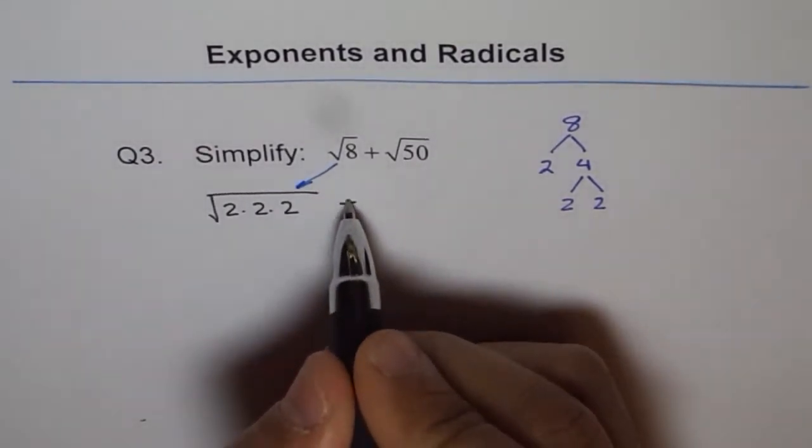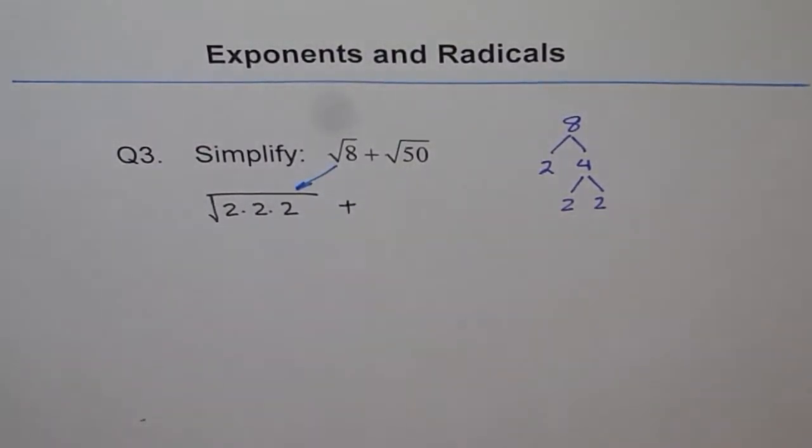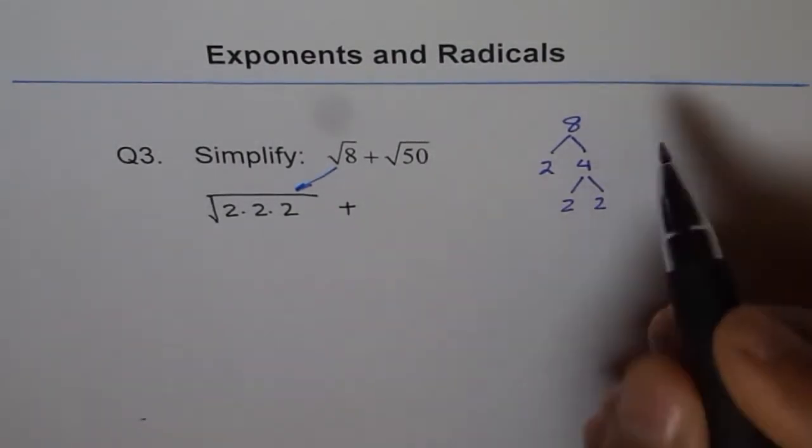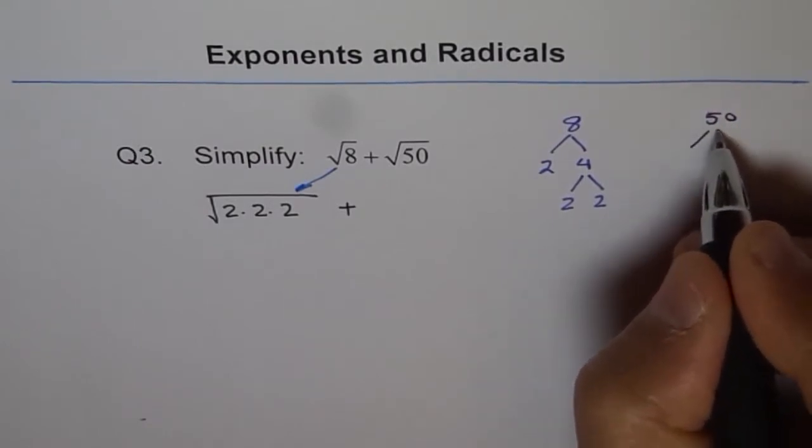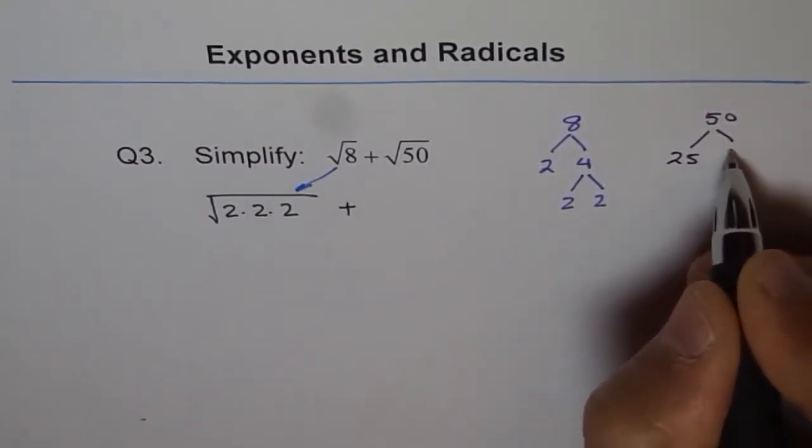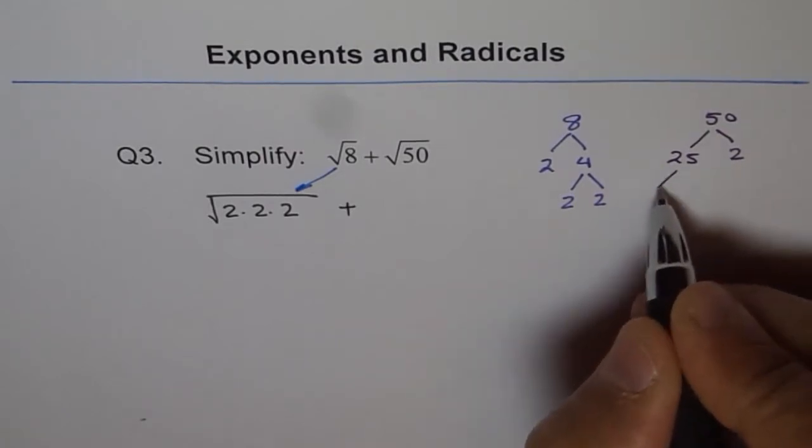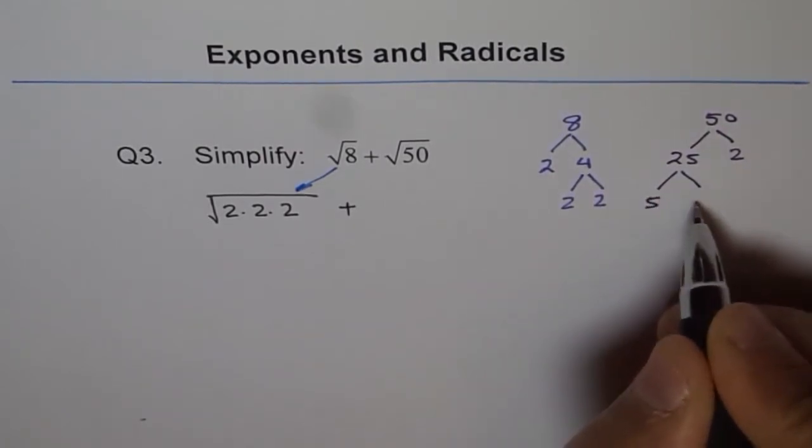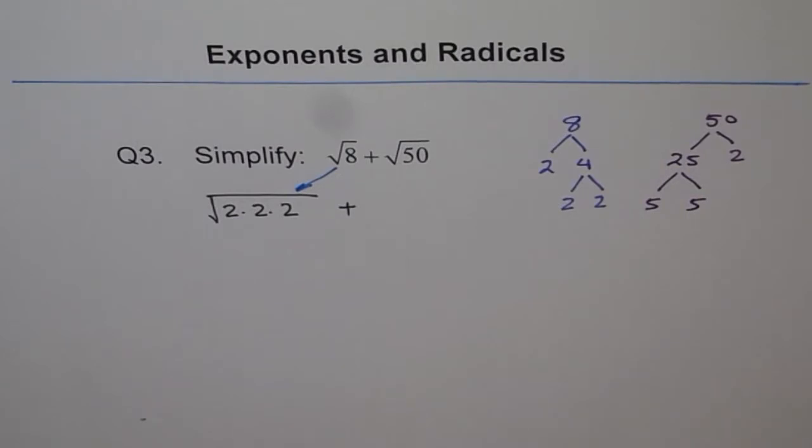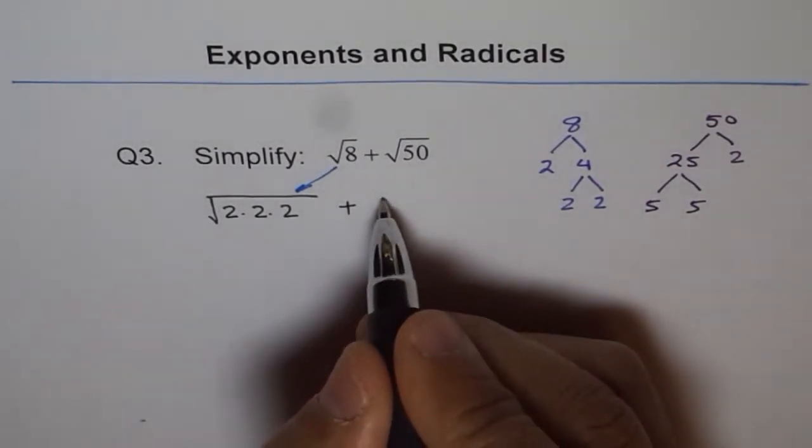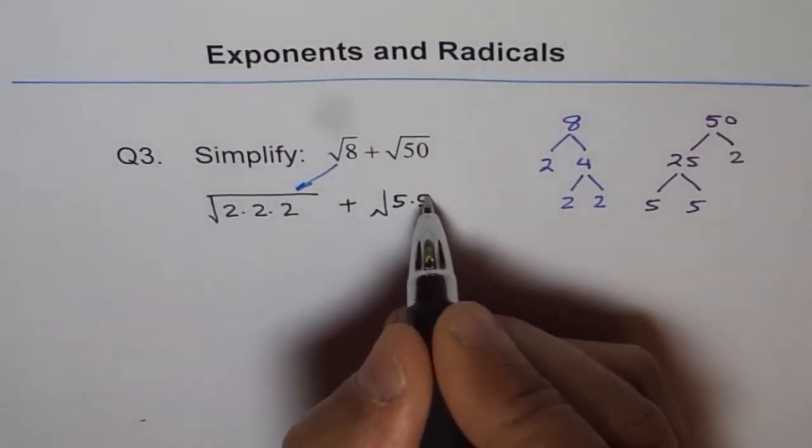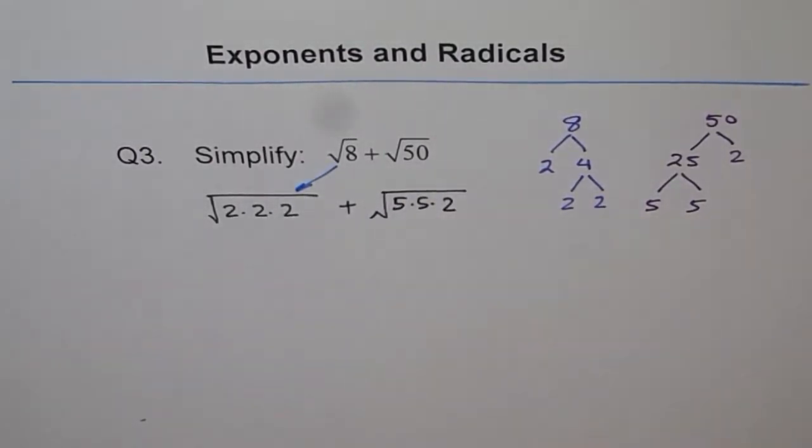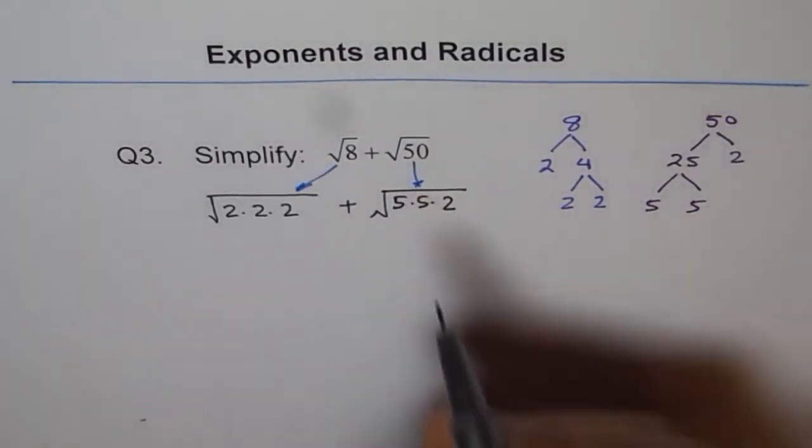Now plus, let me figure out what is square root of 50. For 50, we will do the similar steps. Now 50 can be written as 25 times 2, and 25 can be written as 5 times 5. And therefore, I can write 50 as square root of 5 times 5 times 2. So that is how I am writing 50.